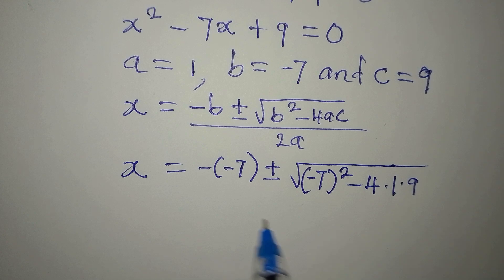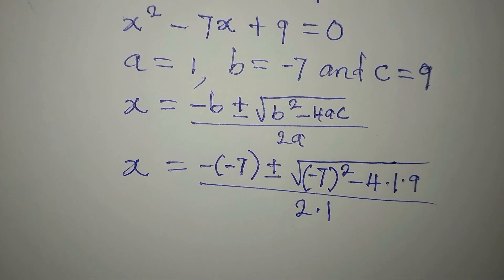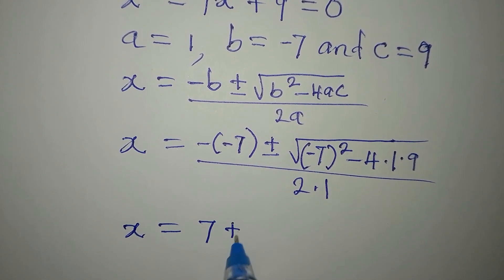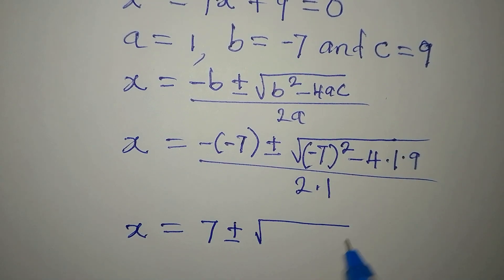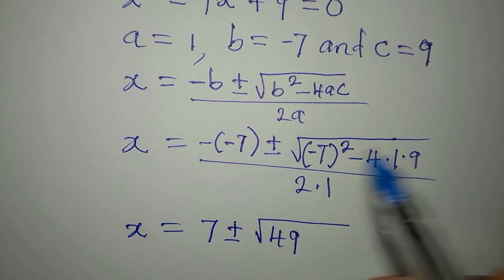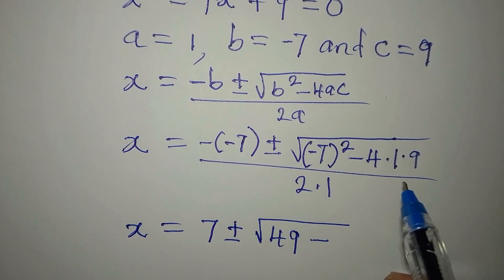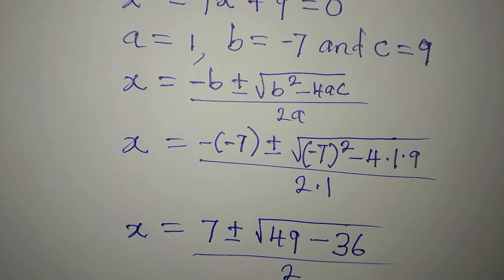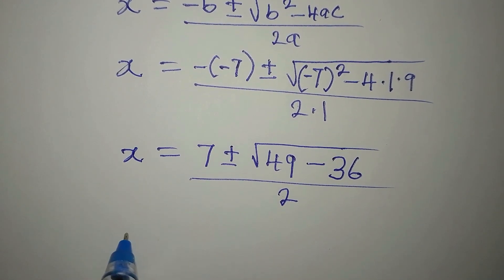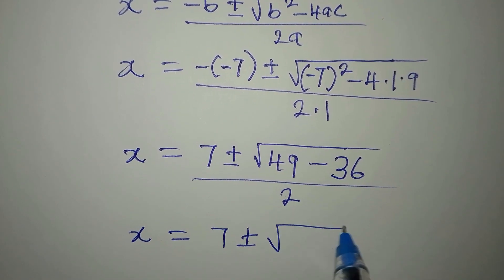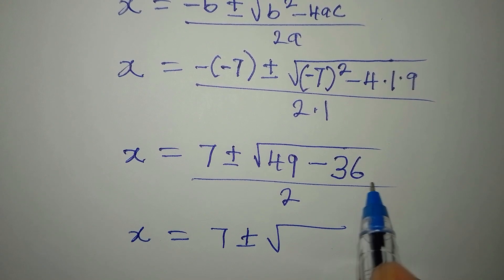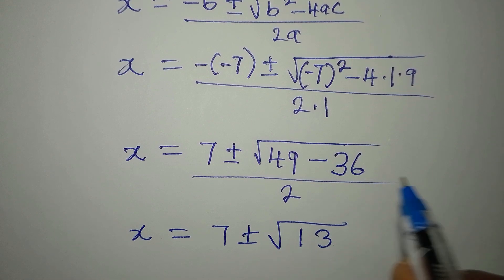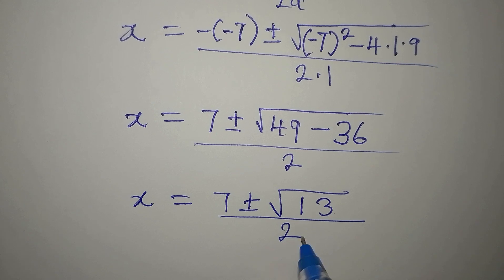Simplifying: negative negative 7 gives positive 7. Then negative 7 squared gives 49, and 4 times 1 times 9 gives 36, so we have 7 plus or minus the square root of 49 minus 36, all over 2. Now 49 minus 36 equals 13, so we write square root of 13.